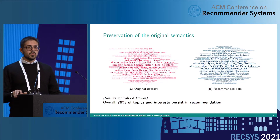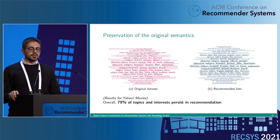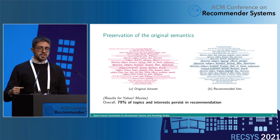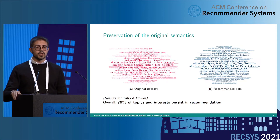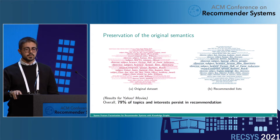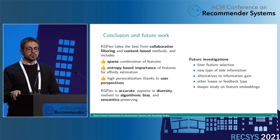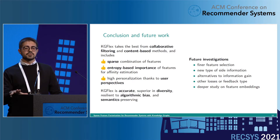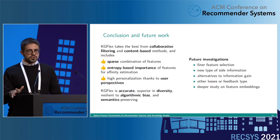Finally, we studied whether KG Flex is able to preserve the original semantics. We measured, for each feature, the importance that it has for the user both in the original dataset and in the final recommended list. We found that, for example, for Yahoo! Movies, 79% of topics and interests persist in the final recommendation. To conclude, KG Flex is accurate, superior in diversity thanks to the user perspectives, resilient to the algorithmic bias, and semantics-preserving. As future investigation, we want to study new types of side information, some alternatives to the information gain, and also some other types of losses.